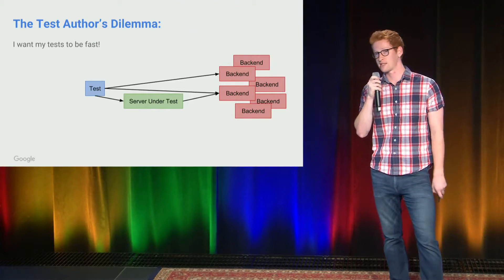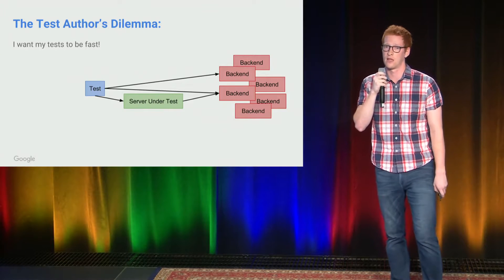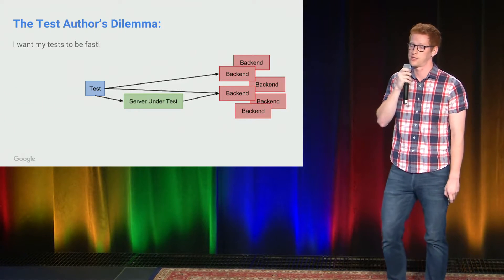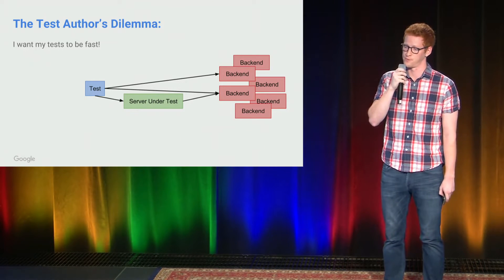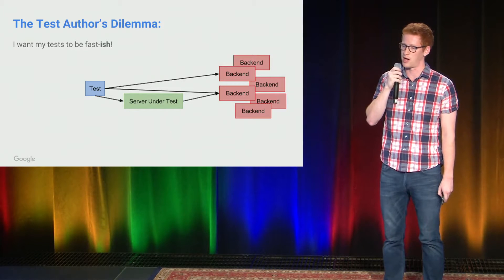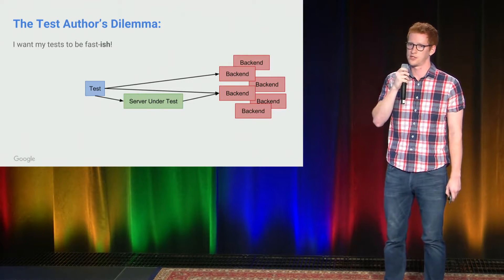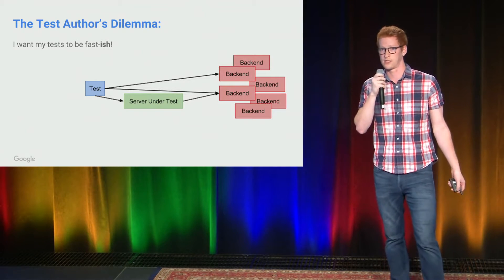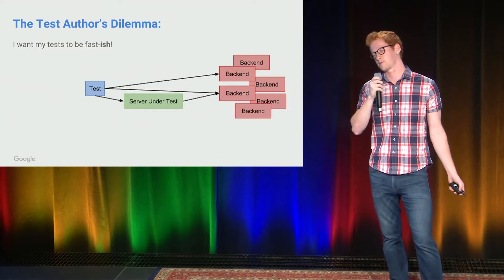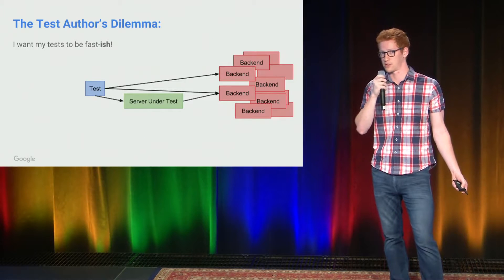When you add more backends, the problem gets worse. Your test is going to get longer, and your test is going to start to flake out too. The common response is to lower your expectations and say, 'I only expect my tests to be fast-ish.' But that affects your development practices because now you're spending your time waiting for your test to complete, and nobody wants to do that.